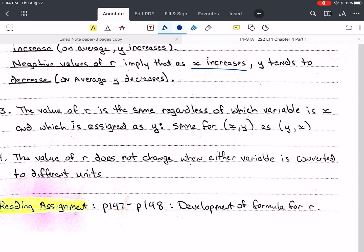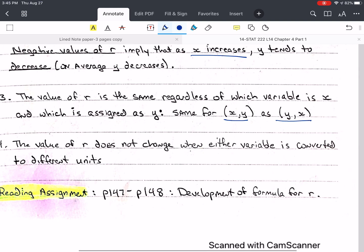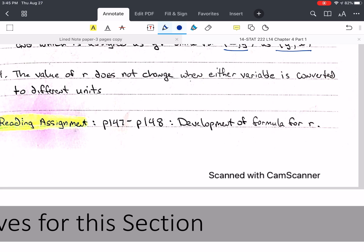The value of r is going to be the same. It doesn't matter which variable is used for x or which variable is used for y. In other words, x, y, or y, x. It's going to give the same value of r. When we get to linear regression, it absolutely matters which one's which, but for correlation, it does not. And the value of r does not change when either variable is converted to different units. It doesn't matter the units. I told you earlier, it's unitless, so the units cancel out. There's no need to go trying to make them the same units, x and y. Just leave them as they are.